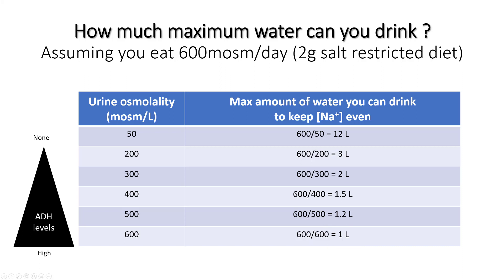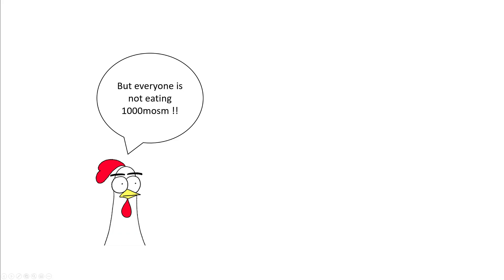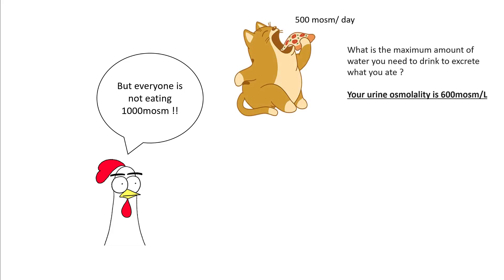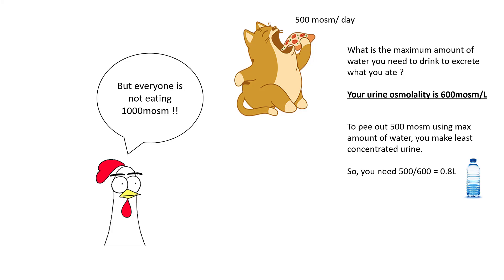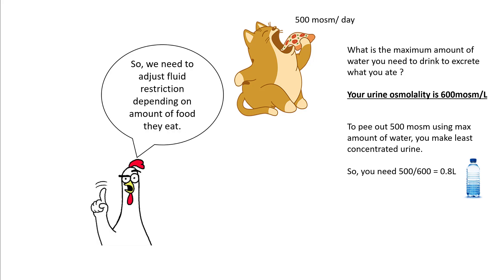One important question is that not everybody is eating 1000 milliosmoles. If you eat less solute in a day — for example 500 milliosmoles per day — and your urine osmolality is 600 because of SIADH, you only need to drink 0.8 litres. If you drink more than 0.8 litres you are going to become hyponatremic. So you need to adjust fluid restriction depending on the amount of solute the patient eats.